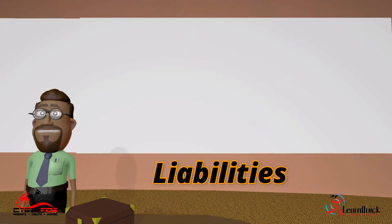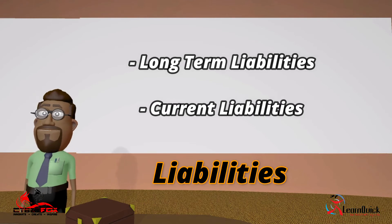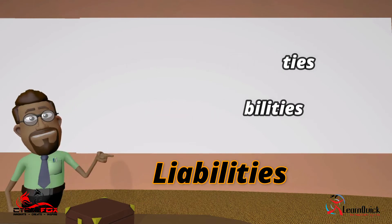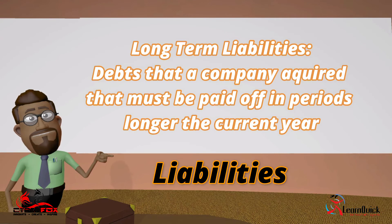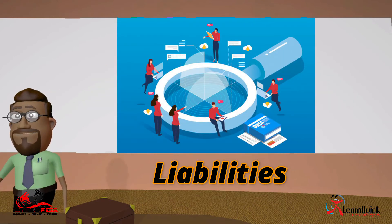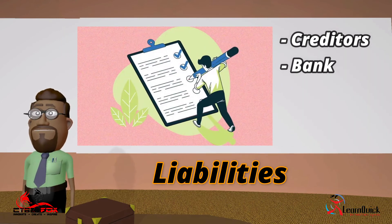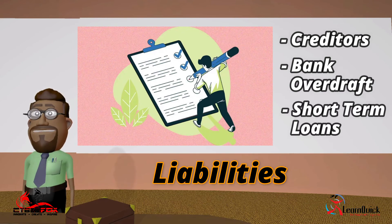Liabilities are divided into two categories: long-term liabilities and current liabilities. Long-term liabilities consist of debts that a company acquired which have to be paid off in periods longer than the current year, such as a bond or mortgage loan on property that the company purchased. Current liabilities are short-term liabilities that are expected to be repaid within a three-month period, such as creditors, bank overdrafts, and short-term loans.